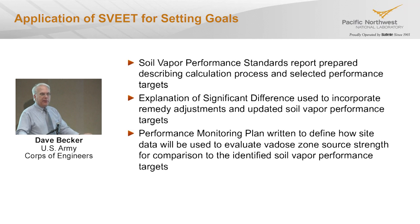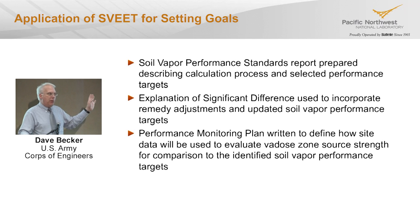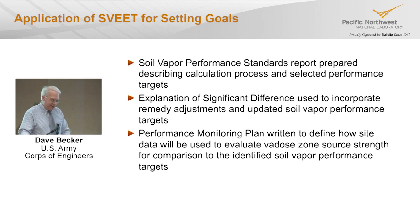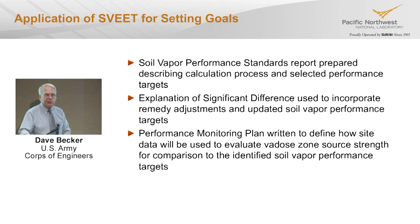A report summarizing the process is now being implemented into a new explanation of significant difference that will lock in the soil vapor performance goals. The goals were significantly lower than the previous goals for most contaminants, though one or two went up slightly, reflecting the vapor transport that wasn't accounted for before. There will be a performance monitoring plan to determine statistically when those goals are being met. It will still be several years before we get there, but this is an example of how the SVE tool can be used intermediately in the process to actually set performance goals — and similar things could be done at the start before even implementing SVE.